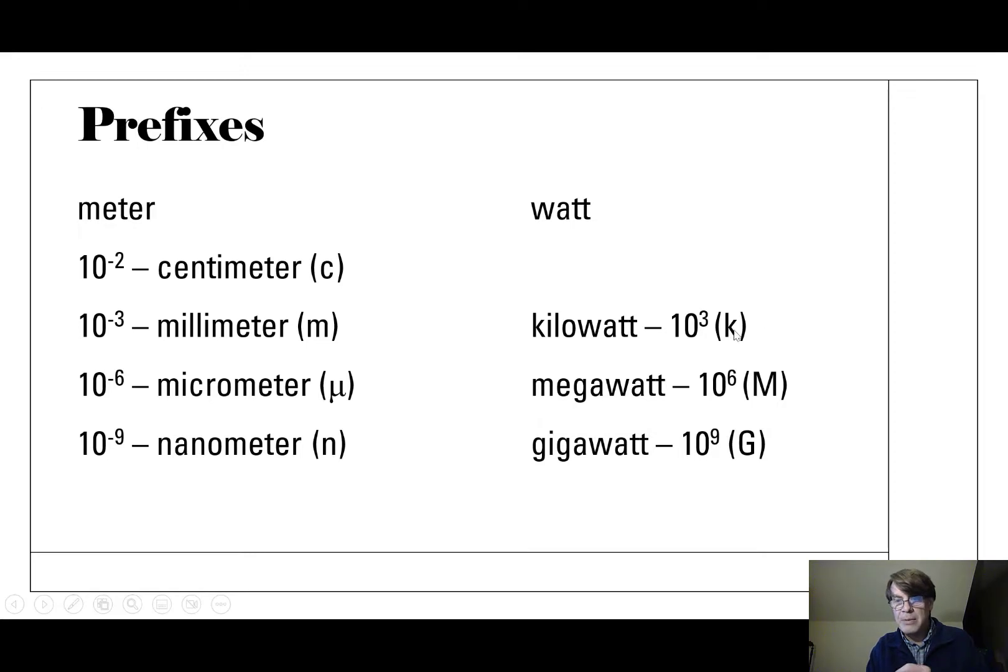Or here you would do KW for kilowatt, or capital MW for megawatt, or capital GW for gigawatt. Watch this video over and over again if you don't quite get it. But with memory, computer memory, it's like crazy. A terabyte is a 1 with 12 zeros after it of bytes of memory. A byte is like eight bits, I think, if I remember correctly.